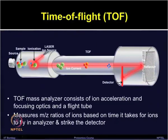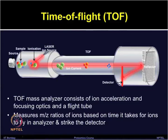The TOF mass analyzers consist of ion acceleration and focusing optics and a flight tube. The sample ionization occurs due to laser beam bombardment, then ions move in the time of flight tube and reach towards the detector. One can also add a reflector and ion mirror, which can increase the path length. The time of flight tube measures the mass to charge ratio of ions based on the time it takes for ions to fly in the analyzer and strike the detector.